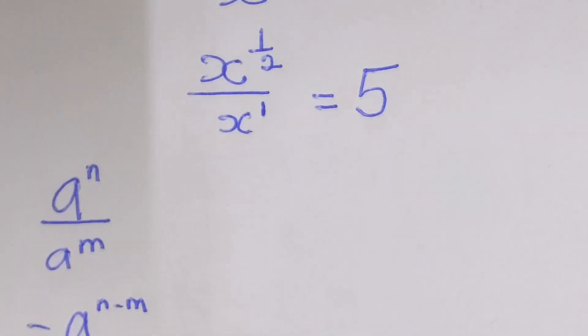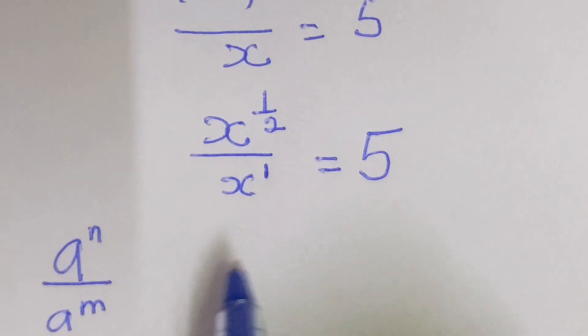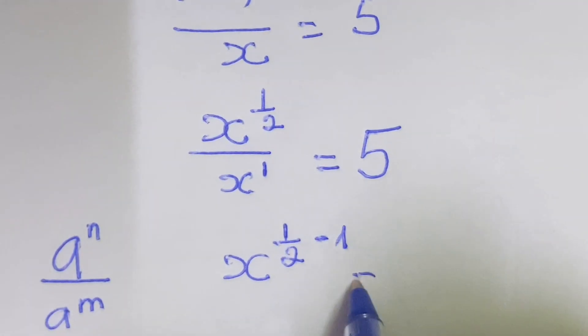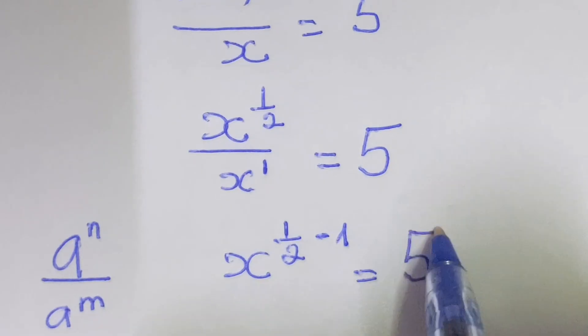Okay, then we shall say x power 1 over 2 minus 1 equal to 5.